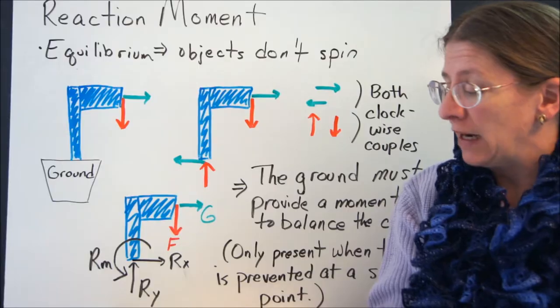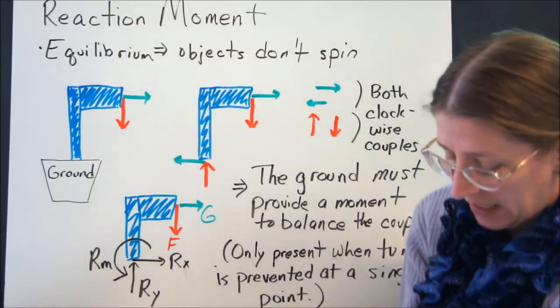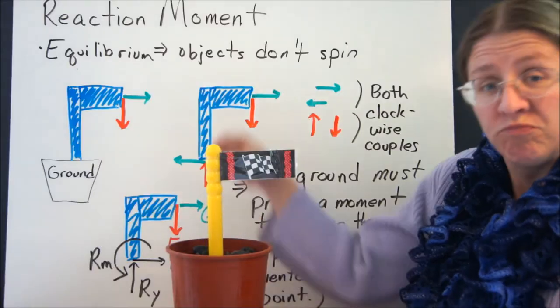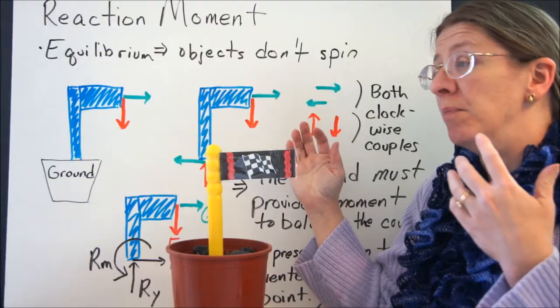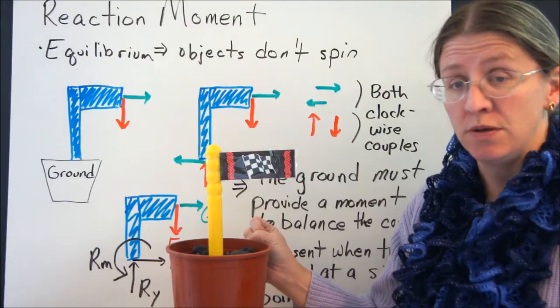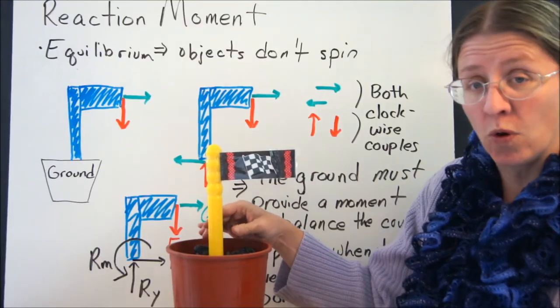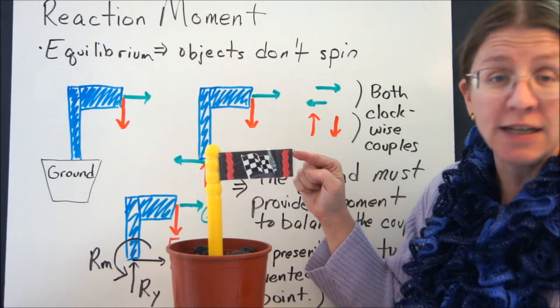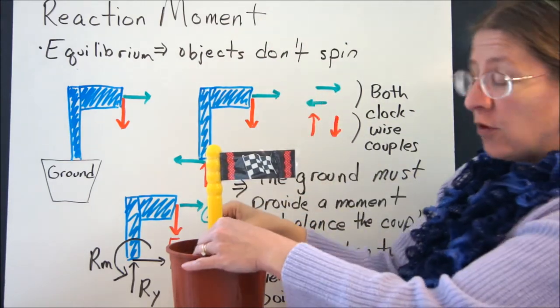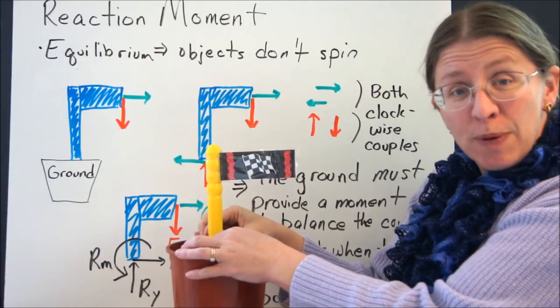When you're looking at an object, like for example this guy, or any kind of flagpole, mailbox, anything stuck into something else so that this is a firm support, you can push on it and it doesn't fall over. You can push this way and it doesn't fall over. The ground by itself is keeping this in place.